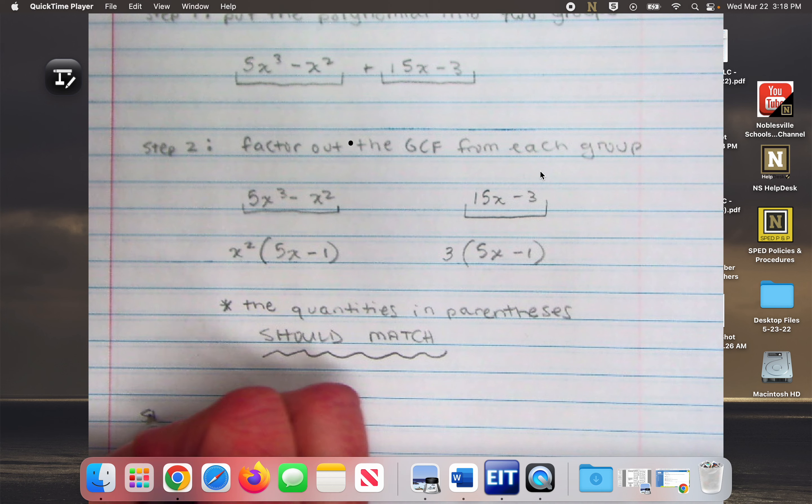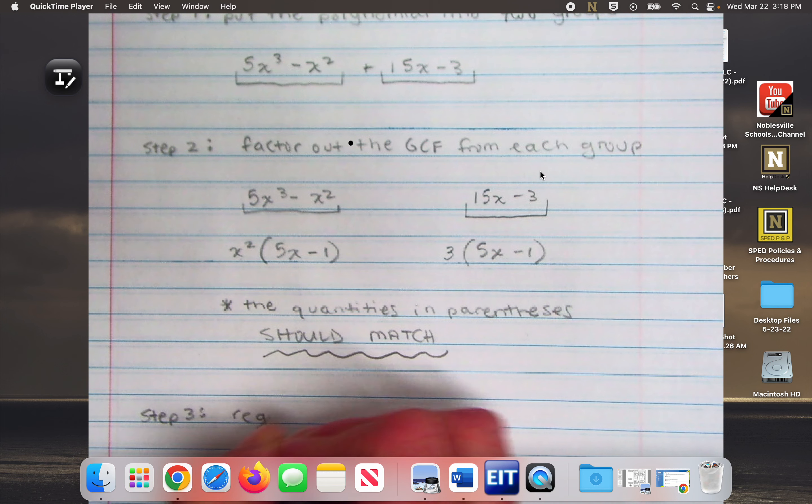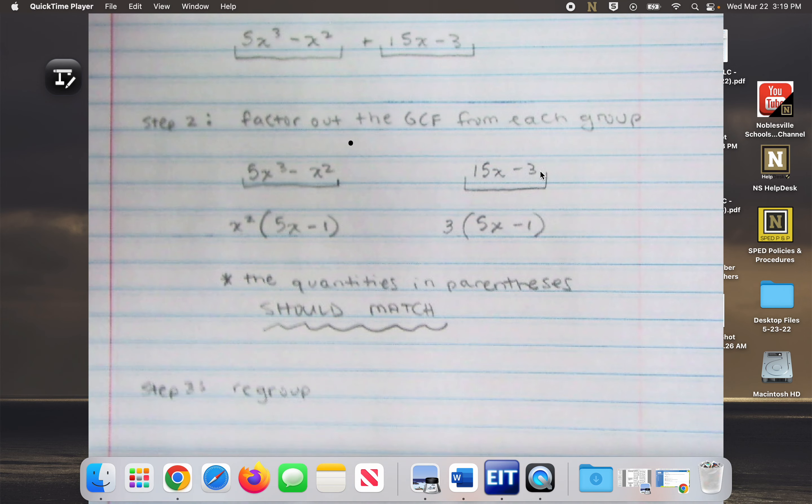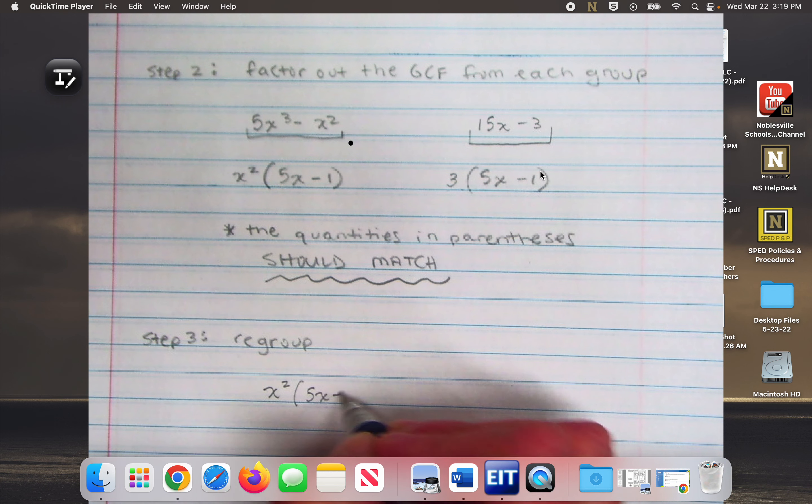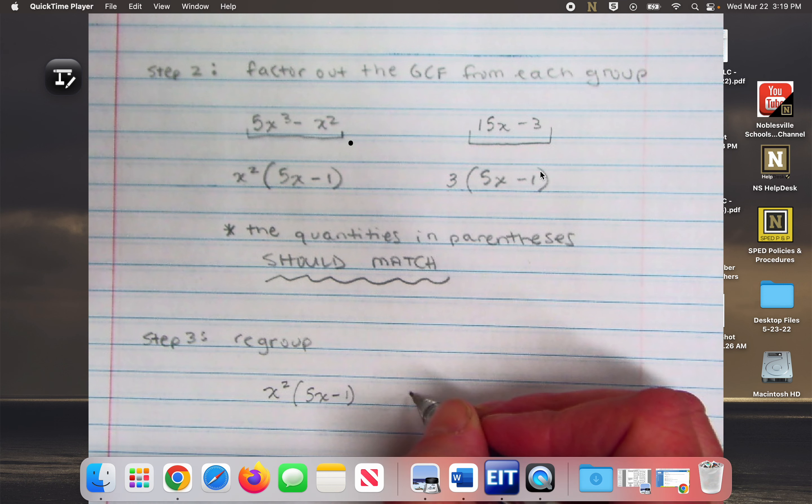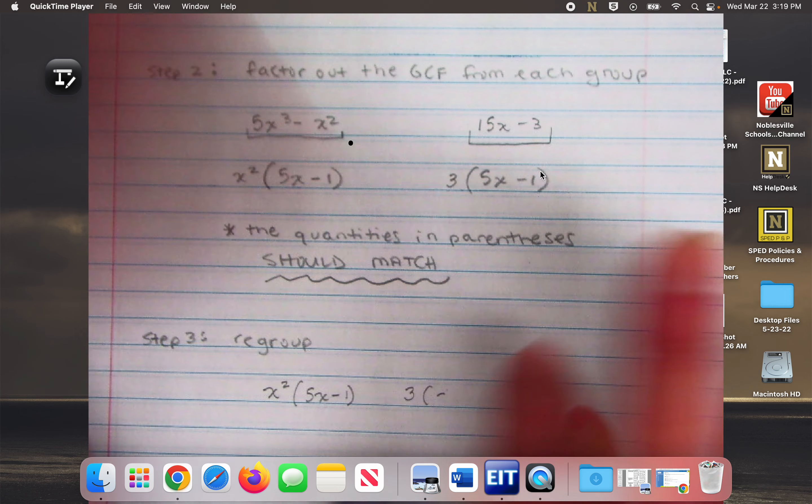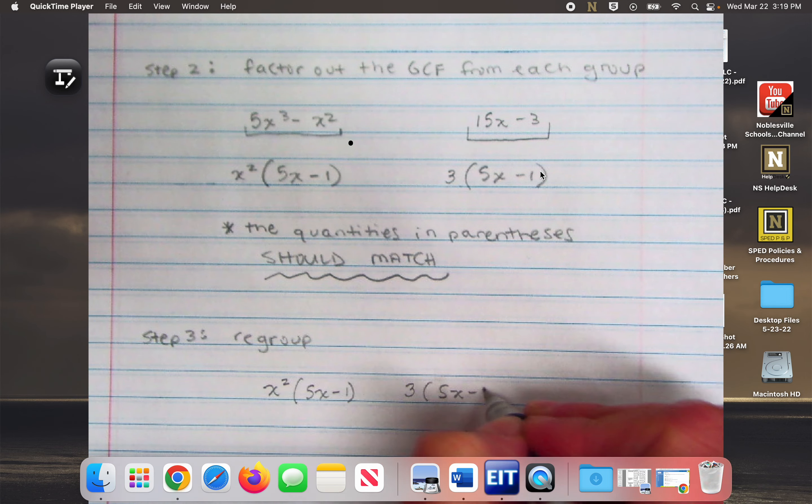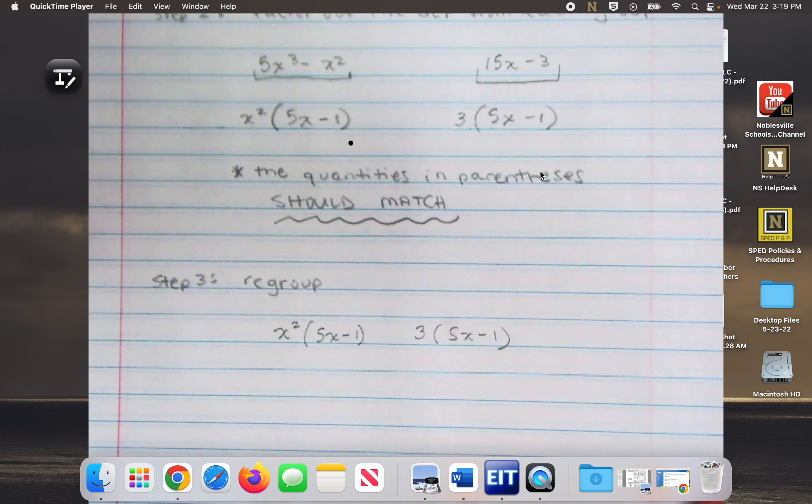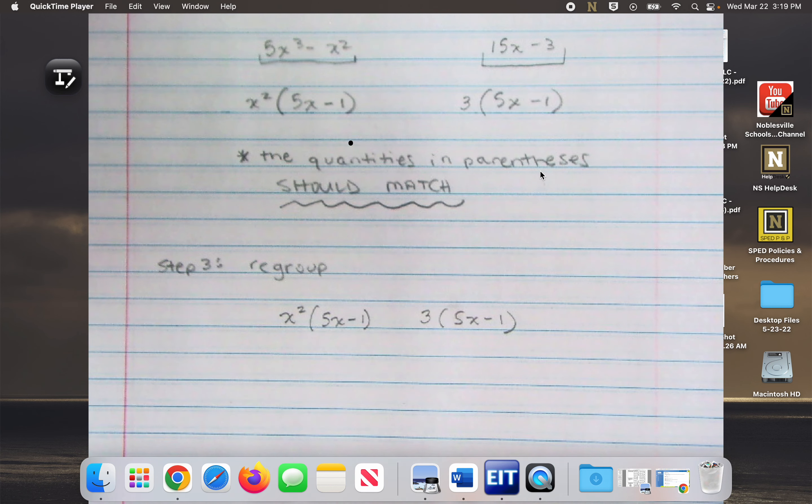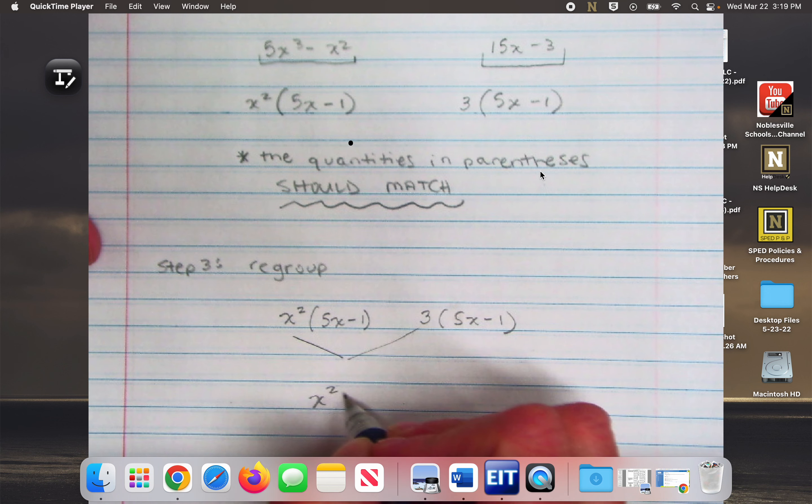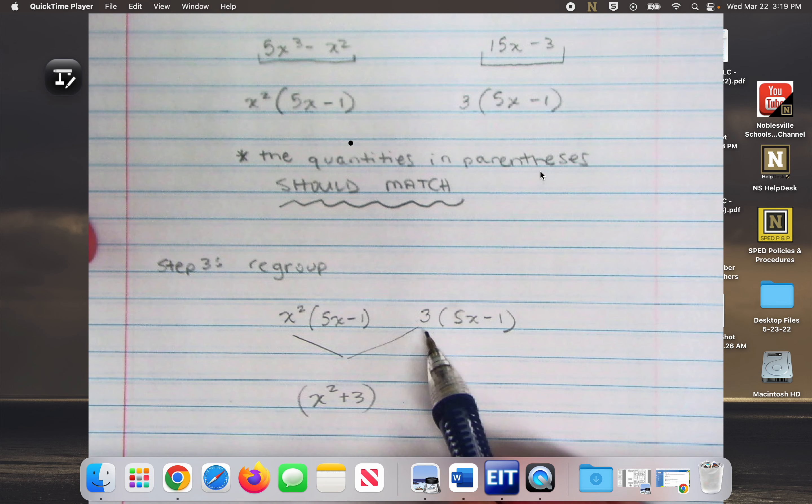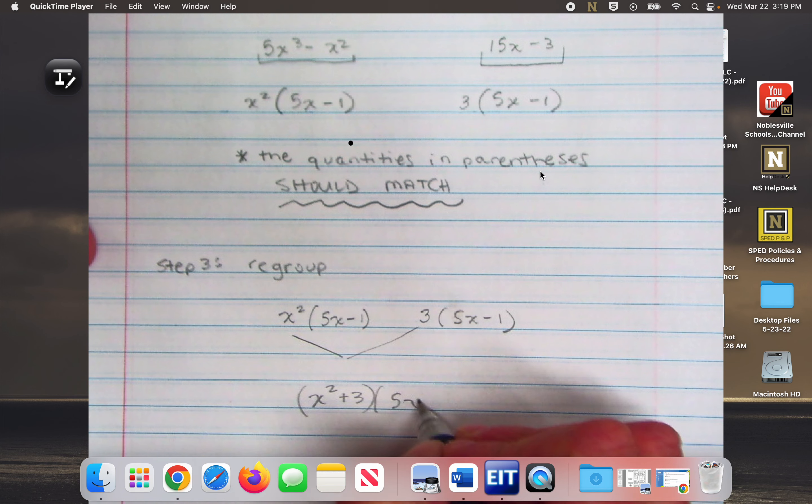And then step three is to regroup. So I'm going to rewrite this again. Just like when we did the AC method, you're not going to rewrite all of these steps every single time, you just work through it. The two values that you've factored out as greatest common factor, those now become a quantity. So I have x squared plus three times the quantity 5x minus one.